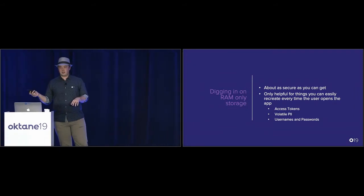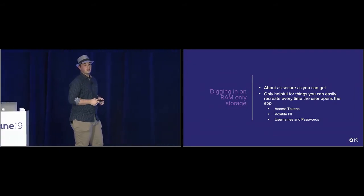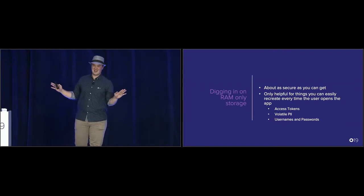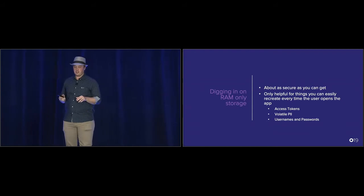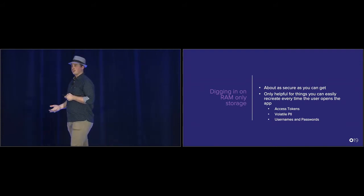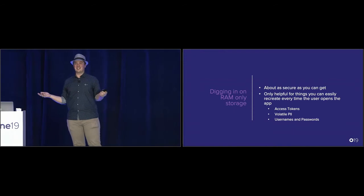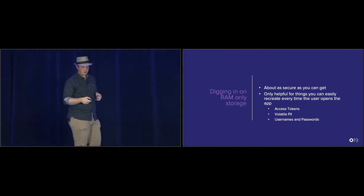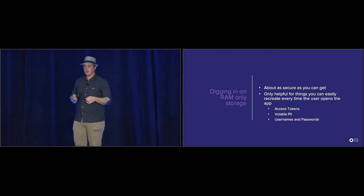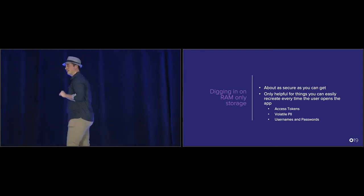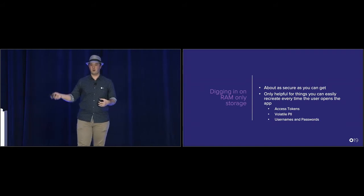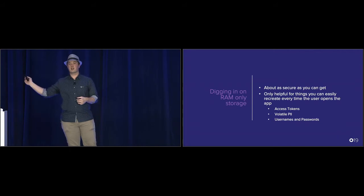The last option is RAM-only storage — as secure as you can get. If they can read your RAM, you are beyond hosed. But it's really only good for volatile things, not for bootstrapping. It doesn't really help if you have the refresh token in RAM only, because your app isn't in RAM for very long. This is really good for access tokens, PII that's small or you don't mind fetching often, and very volatile data. Usernames and passwords should always be RAM-only. Any passcodes — anything that's part of the user-given portion of your encryption flows — should be RAM-only, because if you don't put it on disk, it can't be read by anything else reading your disk.